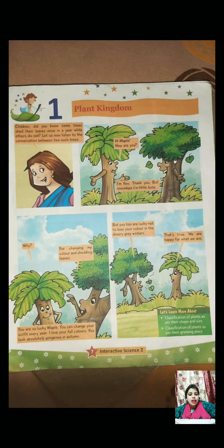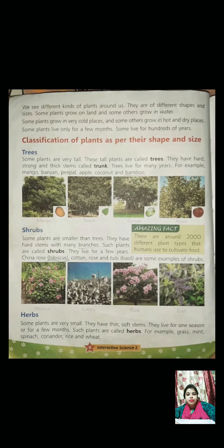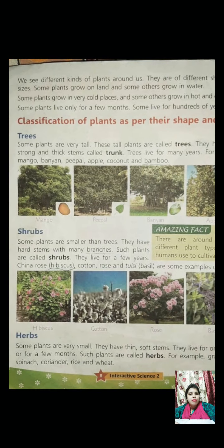As the name says, plant kingdom will be about the different kinds of plants, their shapes, their sizes. The plant kingdom is the topic about the different kinds of plants. Classification of plants means classifying plants on the basis of their sizes, shapes, their location, the areas in which they grow, and the climate.